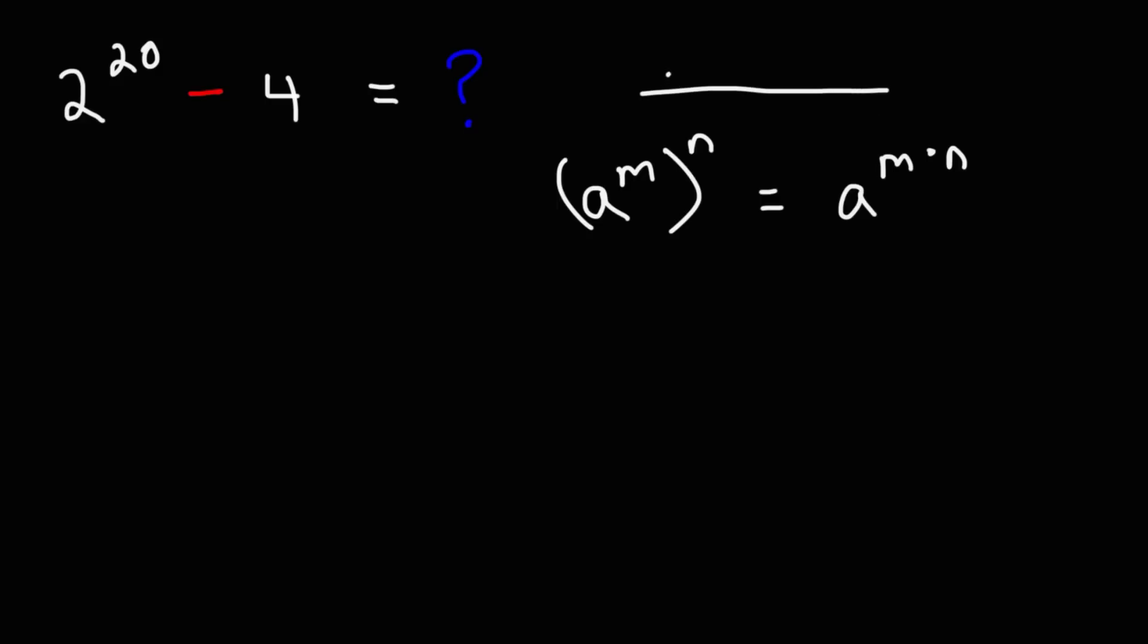So starting with a to the 20th power, we can write that as a to the 10th raised to the second power, because 10 times 2 is 20. Well, instead of base a we have base 2. So we're going to rewrite 2 to the 20th power as 2 to the 10th power raised to the 2nd power.